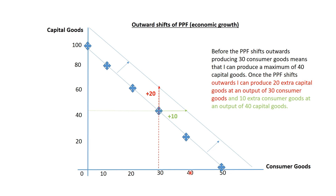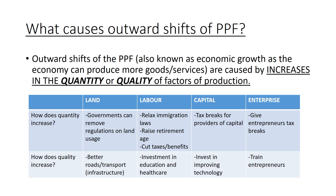What causes outward shifts of the PPF to occur? Outward shifts of the PPF, also known as economic growth, are caused by increases in the quantity or the quality of factors of production. That means either having more land, labour, capital and enterprise, or having more productive land, labour, capital and enterprise. When we look at supply-side policies in macroeconomics, this is what supply-side policies are aimed at doing — allowing the economy to grow and produce more goods and services to meet more needs and wants.